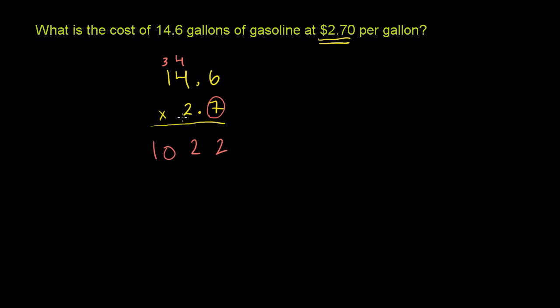Now we're going to deal with this 2. But this 2, at least before we consider the decimal, is really a 20. So we're going to put a 0 here. 2 times 6. We're doing it exactly the same way we would do a traditional multiplication problem. We're ignoring the decimals for now.